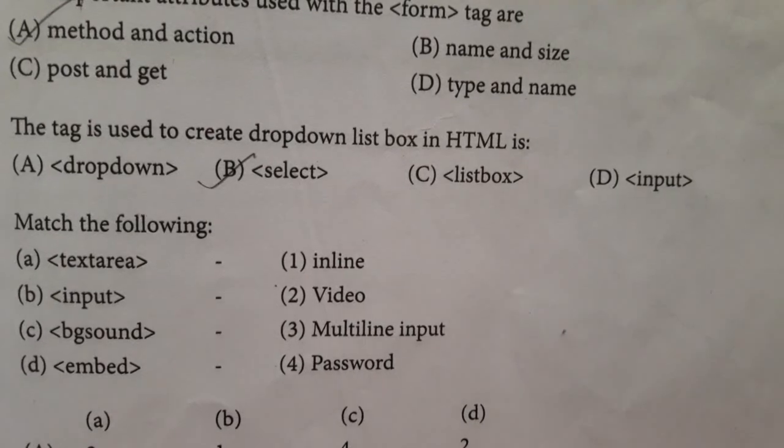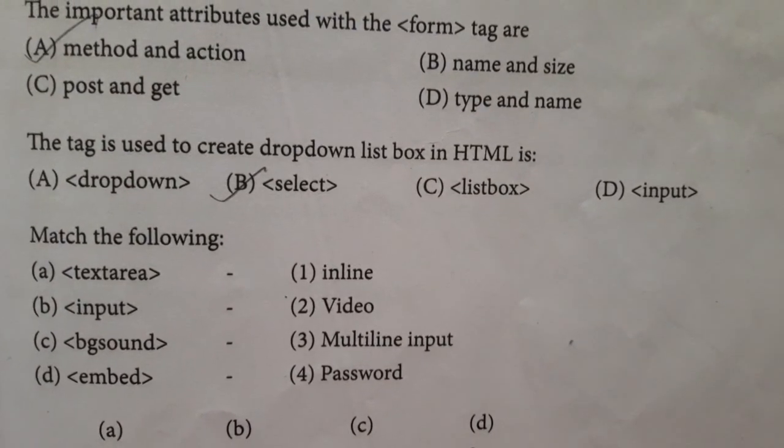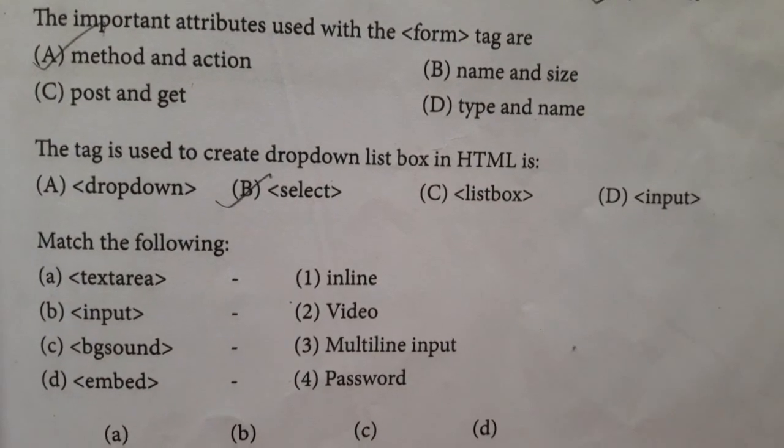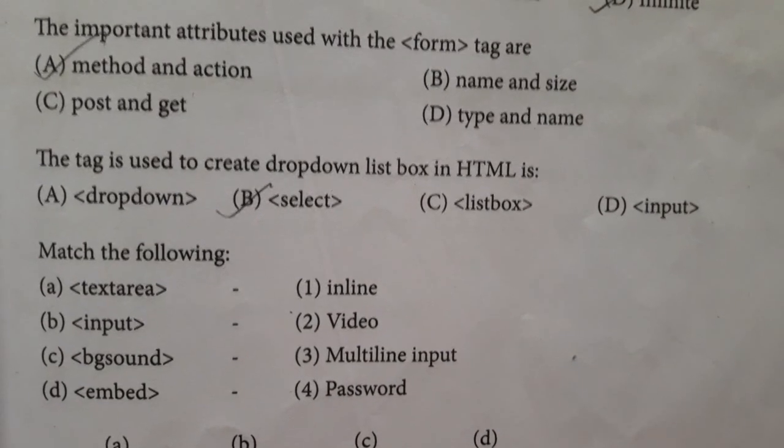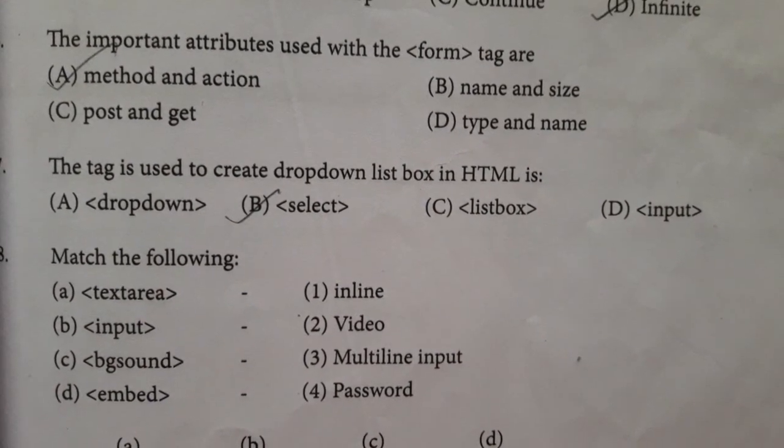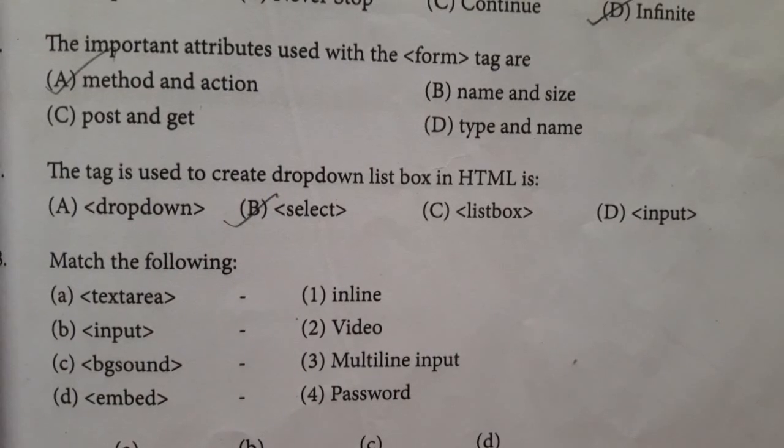Question number 7. The tag used to create a dropdown list in HTML is Option A dropdown, Option B select, Option C list box, Option D input. Answer is Option B, select.